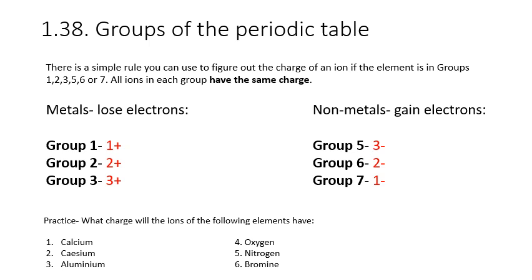Have a practice using this information on the questions. Let's check the answers: calcium is in group 2, so it forms a 2+ ion because it's a metal that loses electrons to get a full outer shell. Caesium is in group 1, so it forms a 1+. Aluminium is in group 3 and forms a 3+. Oxygen is in group 6 and forms a 2−. Nitrogen is in group 5, so it's a 3−, and bromine is in group 7, so that will be a 1−.